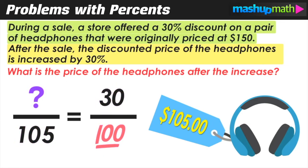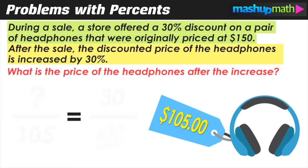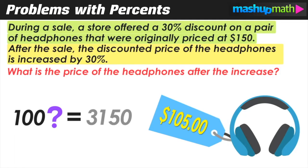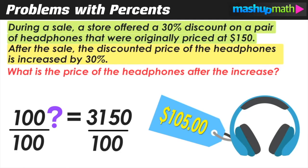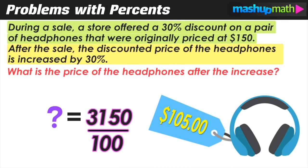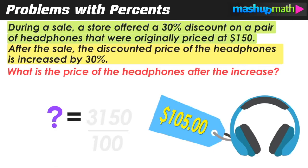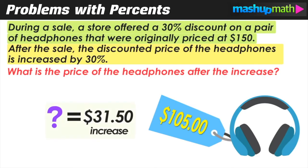We have an unknown value times 100 equal to the second cross product, which is 3150. Dividing both sides by 100, we find that 30% of 105 is $31.50.